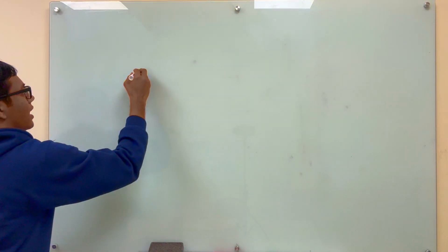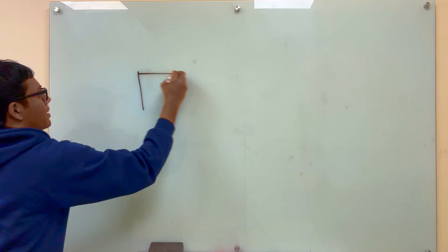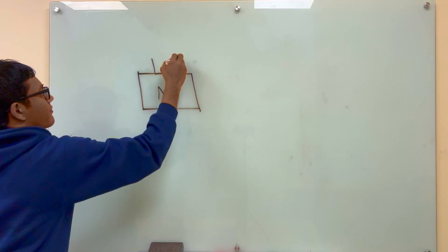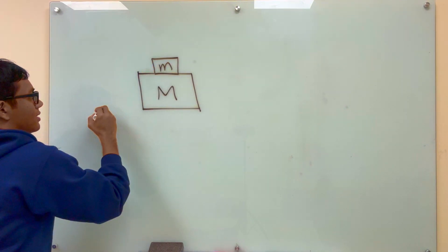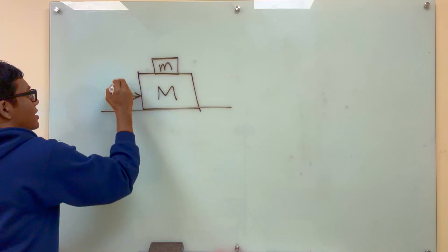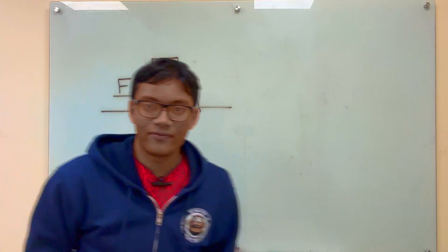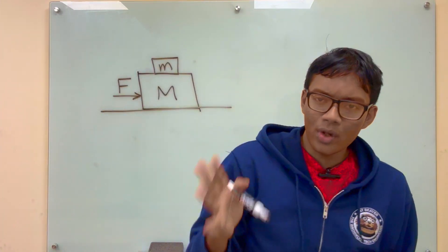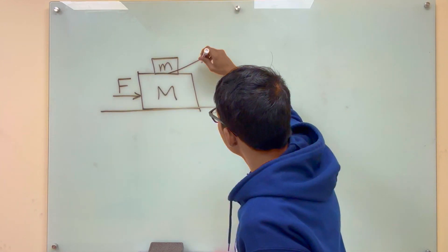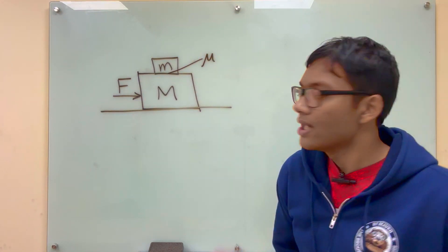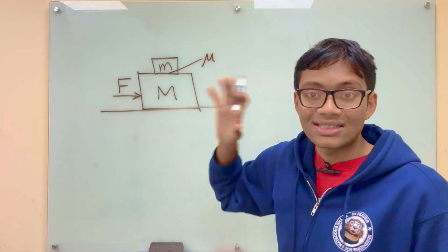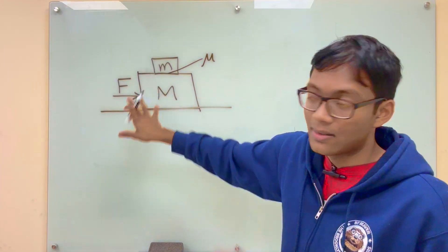Here's the problem. We have a big box of mass capital M and a smaller box of mass lowercase m, and they're sitting on a table, and we push the bottom box with an applied force F. The question is: what does the coefficient of friction between the two blocks have to be so that the box on top does not slip off the box on the bottom?